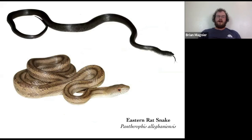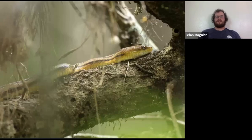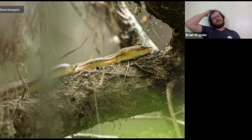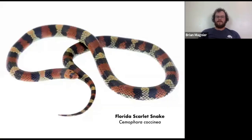Rat snakes are another pretty variable species. Up north and in Georgia through New England you'll typically see a jet black, very large black snake, whereas in Florida you can often see the yellow rat snake — a mustard color or even bright yellow with stripes. They're large and pretty thick-bodied. We'll look at the venomous snakes shortly and you'll see the body shape difference. The rat snake is another cool, relatively common species throughout Florida.